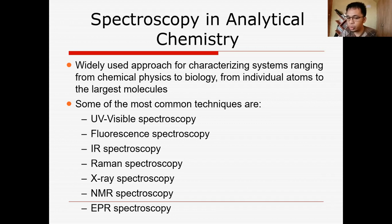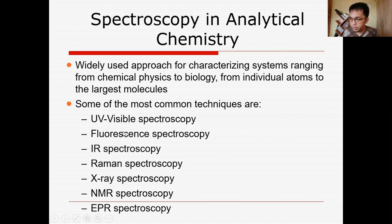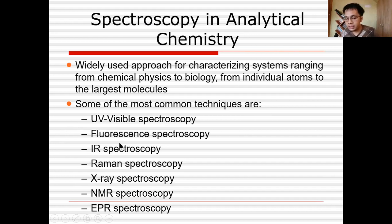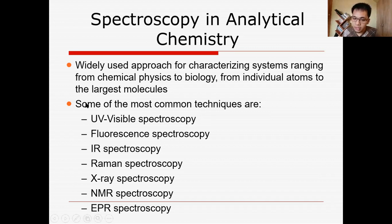Now let's apply this to analytical chemistry. The most common spectroscopic techniques in analytical chemistry for measuring specific samples include UV-Visible spectroscopy, fluorescence spectroscopy, IR, Raman, X-ray, NMR, and EPR. Each has its own characteristics and applications. For example, IR is used to determine functional groups present in inorganic compounds, and UV-Visible spectroscopy is used to determine concentration and to find the lambda max or absorption maximum of a molecule.